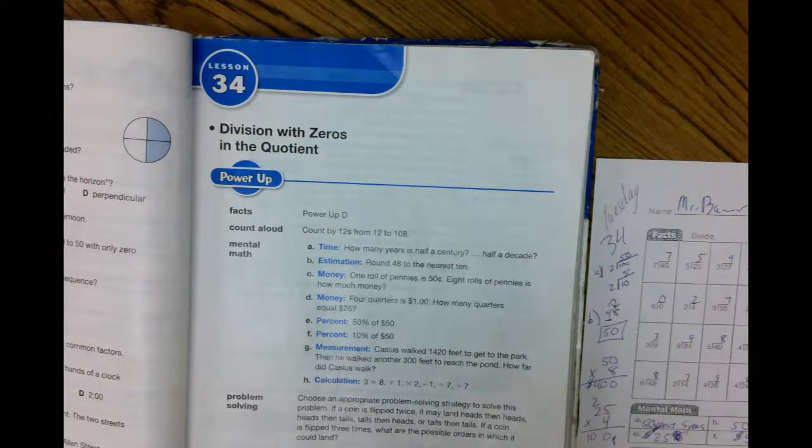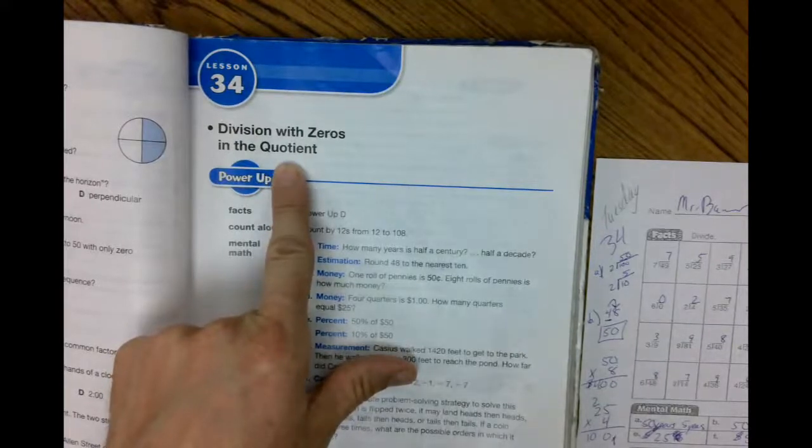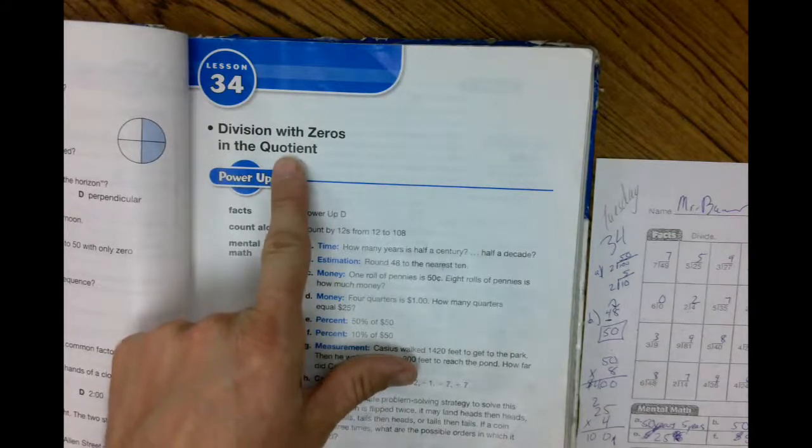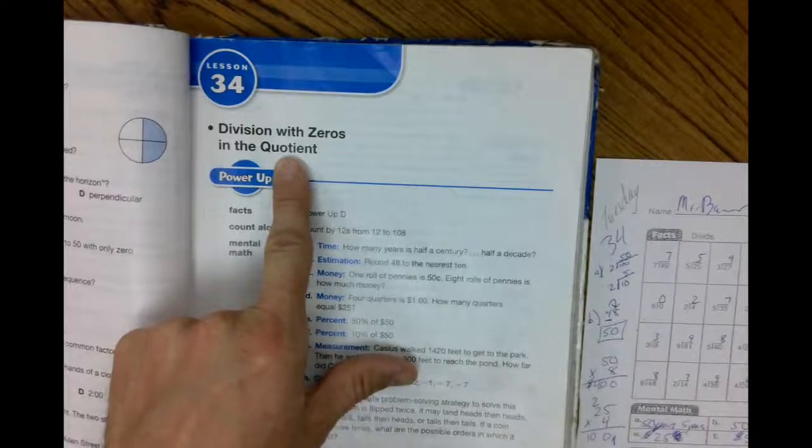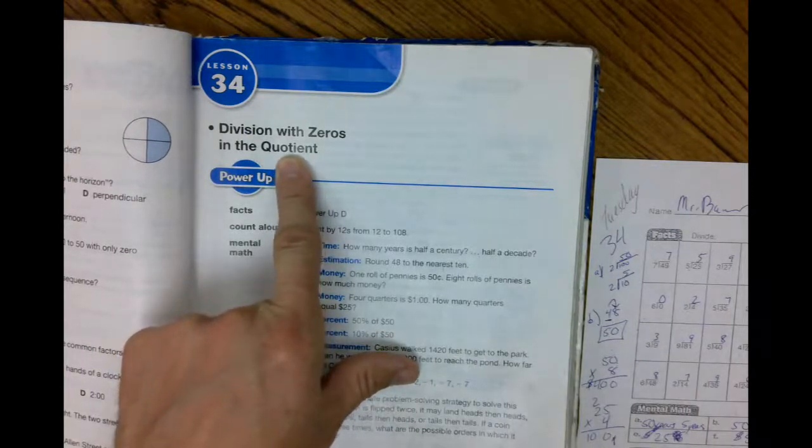Now, some key words are quotient, and the quotient is the answer to a division problem. So we're going to divide, but there's going to be a zero in there. Sometimes it's going to be in the middle, sometimes at the end, and sometimes it's going to cause us to have a remainder.